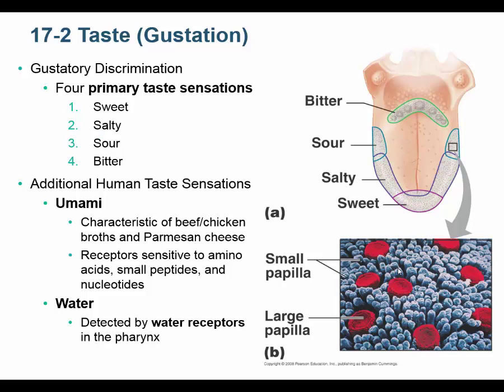For gustation or taste, first of all we have gustatory discrimination — that means we taste different chemicals differentially. This is the typical tongue map that you see: we taste bitter back here, sour here, salty here, and sweet here. I need to tell you this is primarily true but not exactly true. It's not the only place we taste sour, but the sharpest sense of sour is right here. The discriminatory senses are more diffuse than the map makes them appear.